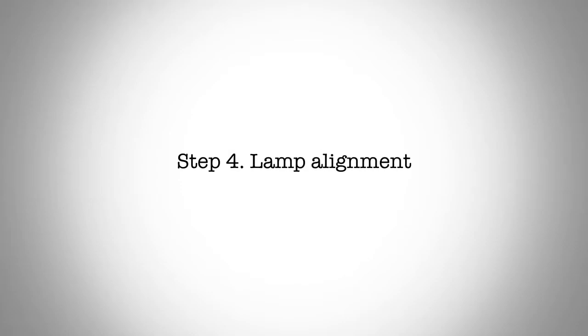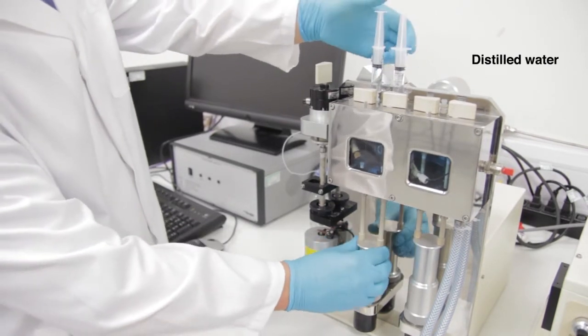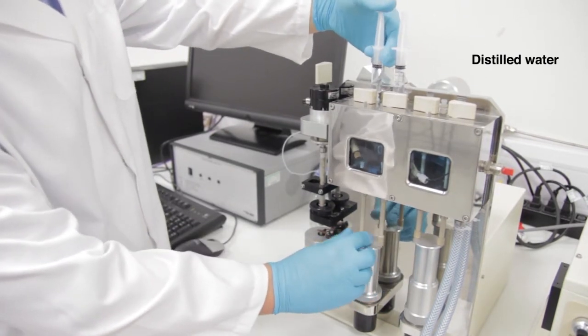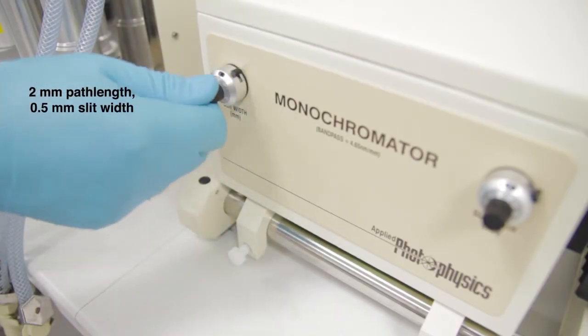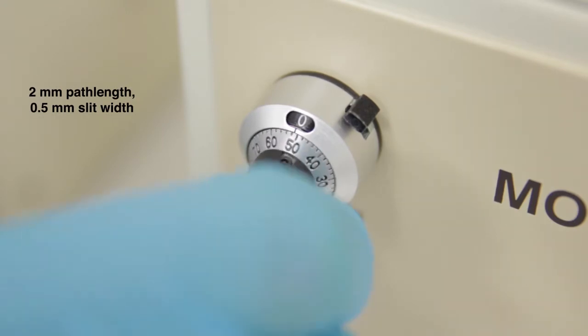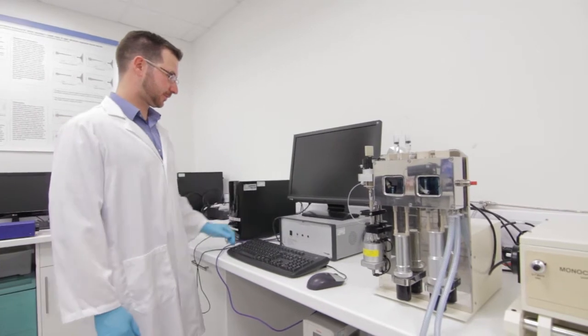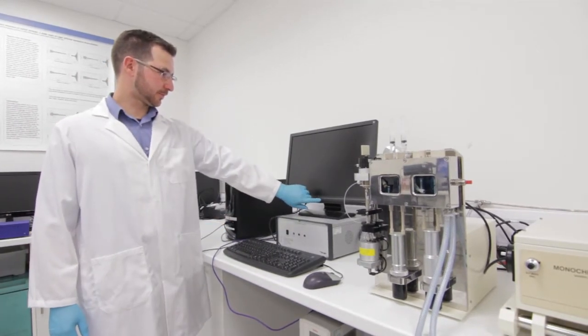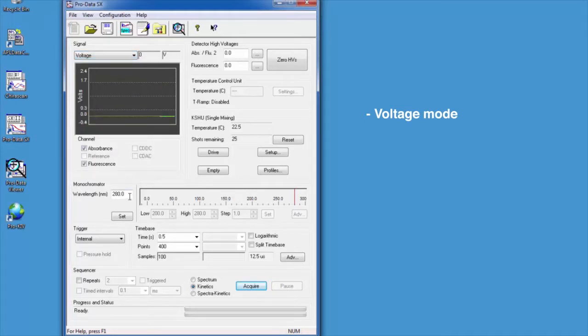Step four, lamp alignment. Flush your kinetic sample handling unit with distilled water and set up your absorbance detector for use with the two millimeter path length and a slit width of 0.5 millimeters. Turn on the electronics unit. Within the Prodata SX software, select voltage mode and set the wavelength to 350 nanometers. Auto PM the absorbance detector.